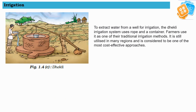The third irrigation system is the dekli. In this system, a rope or container is used to extract water from a well. A big log of wood is supported on another log. One end has a heavy rock or weight, which helps pull the water-filled bucket up from the well. Once the farmer empties the bucket, that end goes down into the well again to refill. It is still used in many regions and is considered one of the most cost-effective approaches.